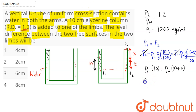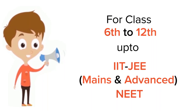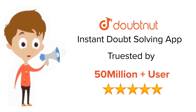Substituting the densities: 1200 × 10 = 1000 × (10 + x), which gives 12 = 10 + x, so x = 2 centimeter. Therefore the level difference between the two free surfaces is 2 centimeter, which means option number 2, that is 2 centimeter, is the correct answer.